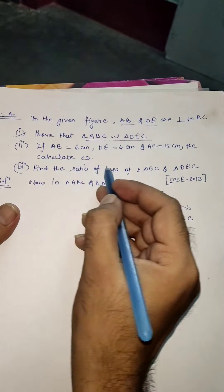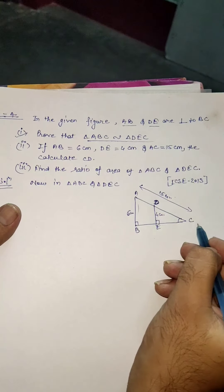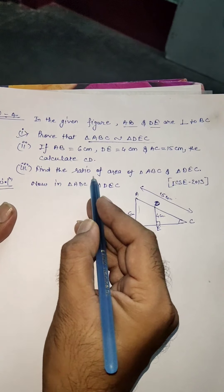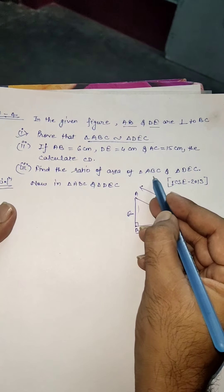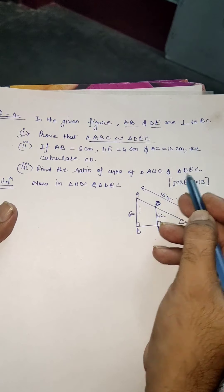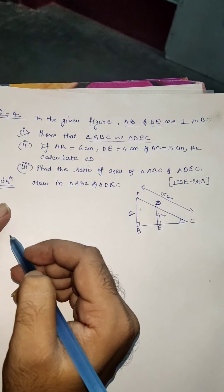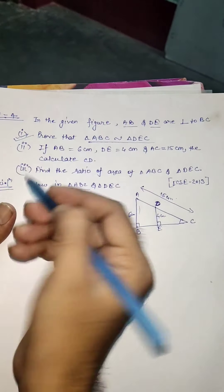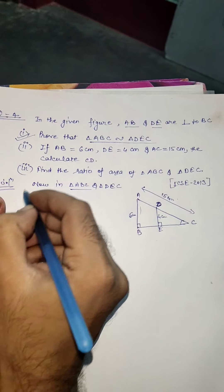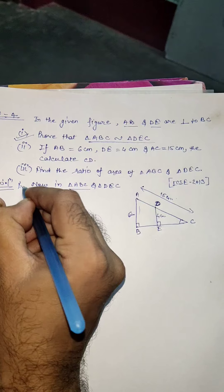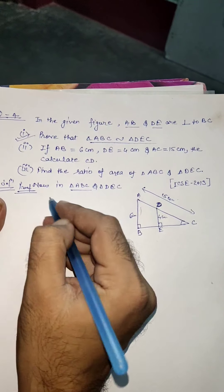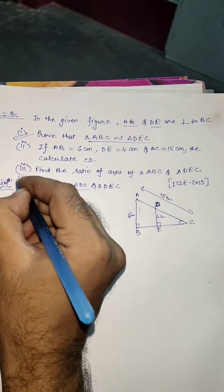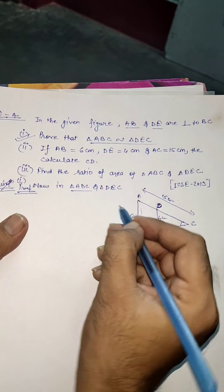We need to find out CD. In the third part, we need to find the ratio of the areas of triangle ABC and triangle DEC. I'm going to start by solving the first part — it's a proof, so I'll write 'Proof' here.